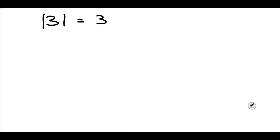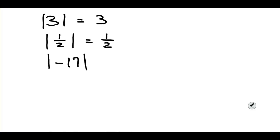Let's do a few examples. The absolute value of three is just three. The absolute value of one-half is just one-half. The absolute value of negative 17 is just 17. Those are just a few examples to show you that the absolute value, when you solve it, will never, ever be negative.